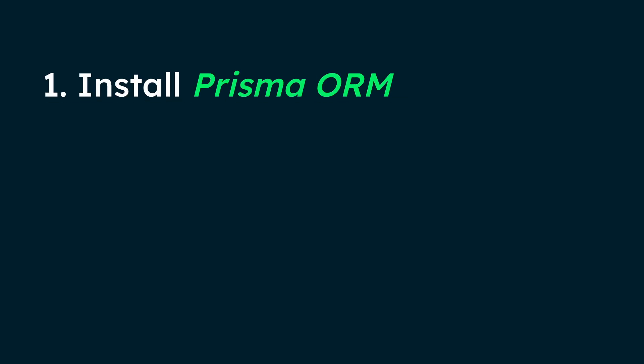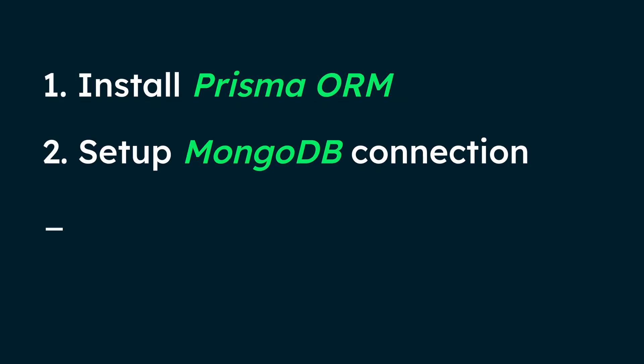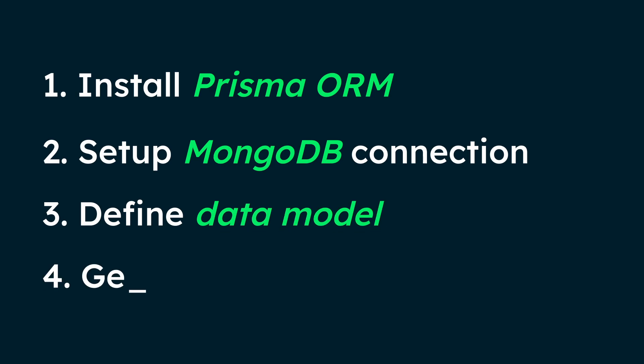Getting started with Prisma ORM and MongoDB takes just a few steps. First, install Prisma ORM in your project. Then configure the MongoDB connection, define your data model, generate a Prisma client, and use the client in your application. For an in-depth guide, check out the complete walkthrough of building a full-stack app with Next.js, Prisma ORM, and MongoDB.